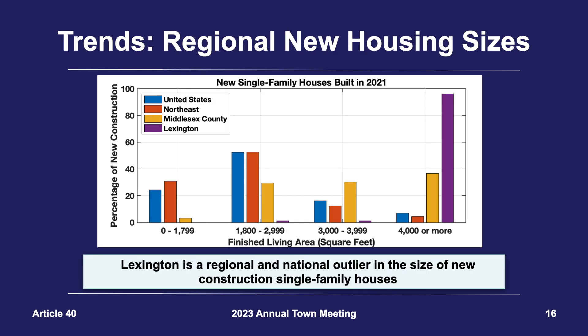We can also look at the trend nationally and regionally, with the blue bar representing the distribution of new construction from the entire United States and the red bar representing new construction for the entire Northeast. The yellow bar represents the new construction distribution across all of Middlesex County and the purple bar represents only Lexington. The size of new single-family housing in Lexington is almost entirely comprised of homes greater than 4,000 square feet finished living area. Nationally, builders are responding to changes from the pandemic, but this does not explain why houses in Lexington are so much bigger than everywhere else.